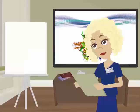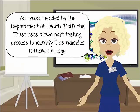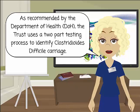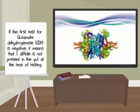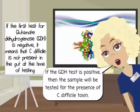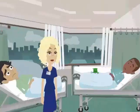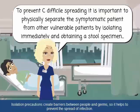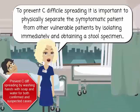The trust uses a two-part testing process to identify Clostridium difficile carriage, including testing for GDH. If the first test is negative, C. difficile is not present in the gut at the time of testing. If the GDH test is positive, the sample will be tested for the presence of the C. difficile toxin. To prevent C. difficile spreading, it is important to physically separate the symptomatic patient from other vulnerable patients by isolating them immediately and obtaining a stool sample.